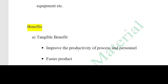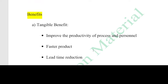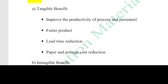There are also benefits — tangible benefits and intangible benefits. Tangible benefits are those you can see and measure. These include: improve the productivity of processes and personnel, faster product lead time reduction, supply delivery time reduction, order processing time reduction, and paper and postage cost reduction, since everything is computer-based with IT.